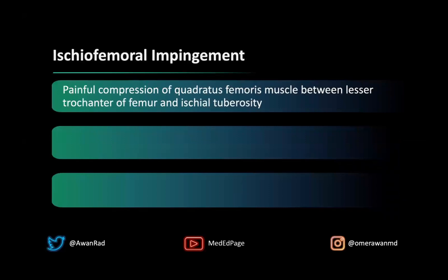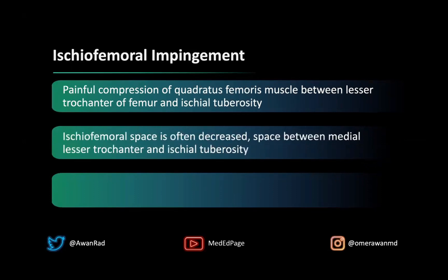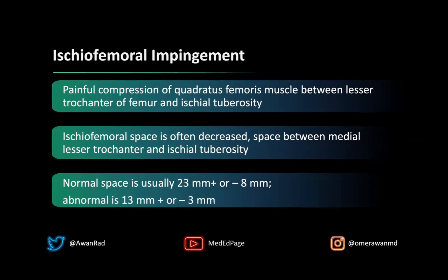This is a really important diagnosis that doesn't get talked about a lot. Ischiofemoral impingement is painful compression of the quadratus femoris between the lesser trochanter of the femur and the ischiotuberosity, where this ischiofemoral space is often decreased. Normally this space is about 23 millimeters plus or minus 8 millimeters, but it's abnormal at around 13 millimeters plus or minus 3 millimeters. You can actually make that measurement in real time when you're reading an MRI.